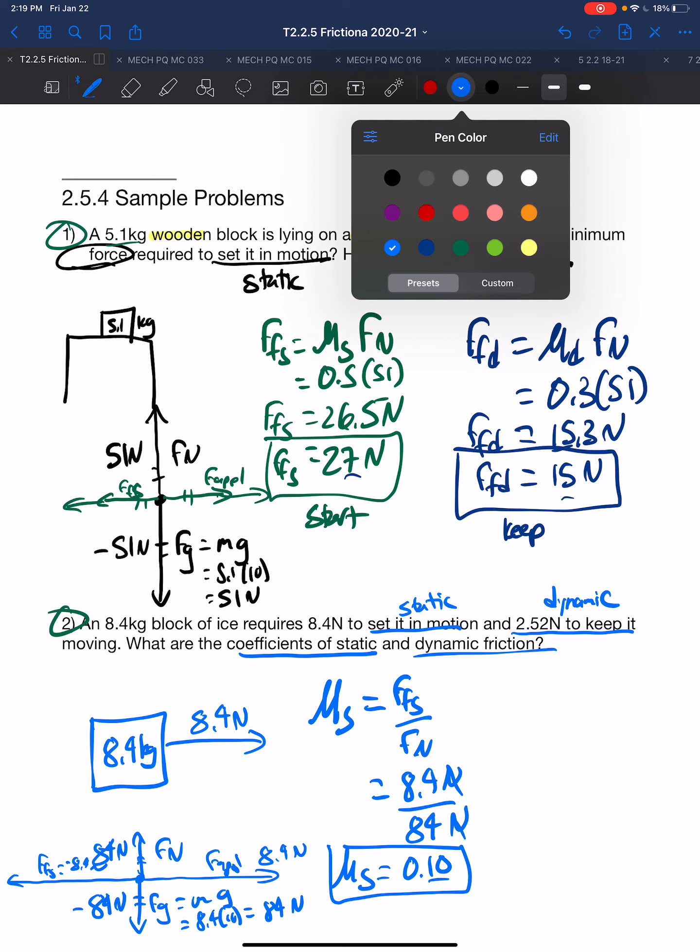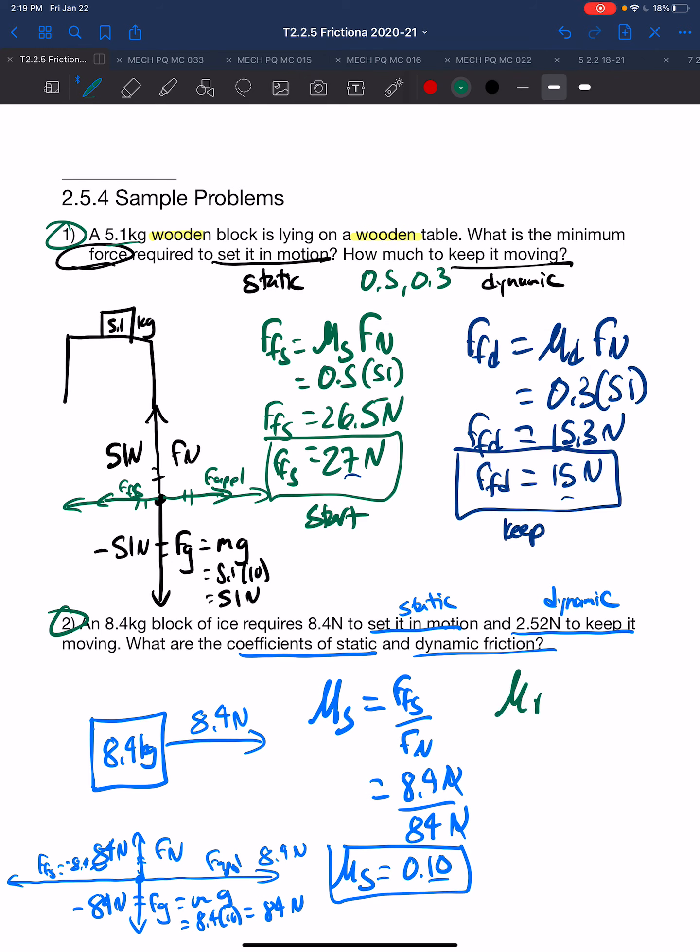Our mu dynamic definition is the force of friction dynamic to the force normal. The force of friction dynamic we are told is 2.52 newtons, and the force normal is 84 newtons. Dividing those out, we get 0.030. Again, two significant digits. This is the mu dynamic and the mu static.